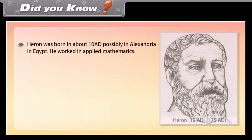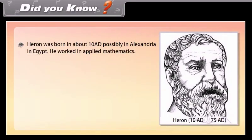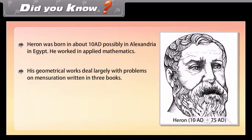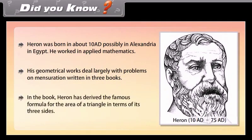Did you know? Heron was born in about 10 AD, possibly in Alexandria, Egypt. He worked in applied mathematics. His geometrical works deal largely with problems on mensuration, written in three books. In one of those books, Heron derived the famous formula for the area of a triangle in terms of its three sides.